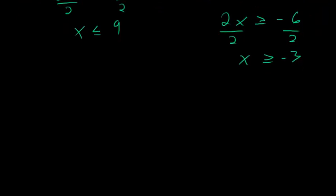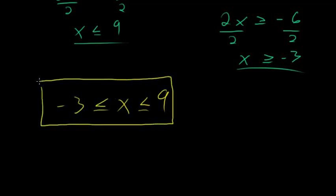And now if I combine both of these solutions here, I can just put the x in the middle. We know it's less than or equal to 9, and it's greater than or equal to negative 3. So this here is my solution.